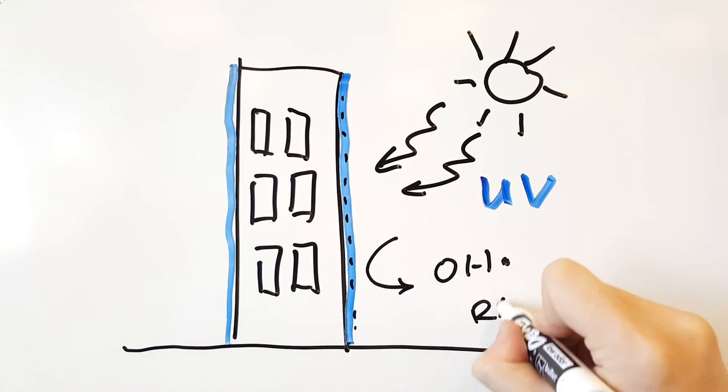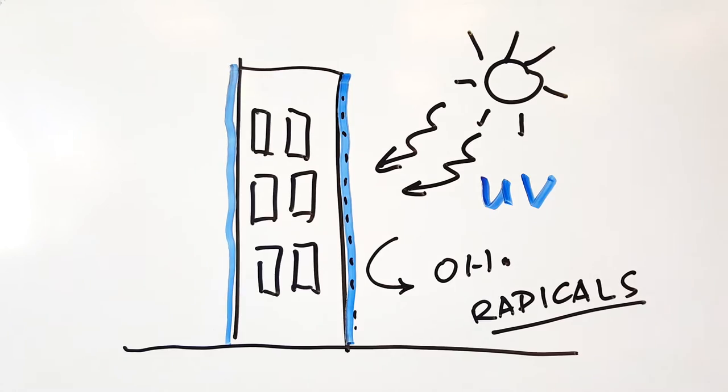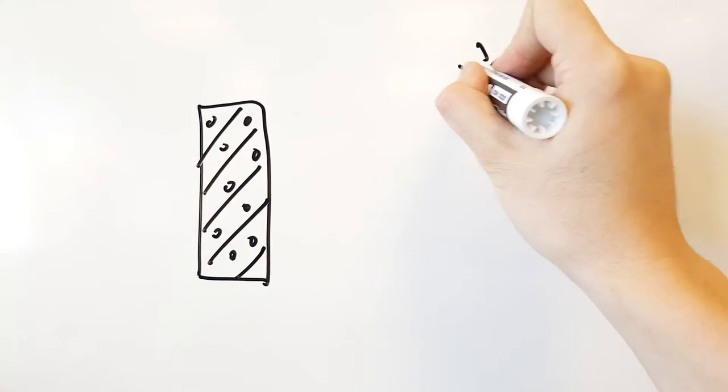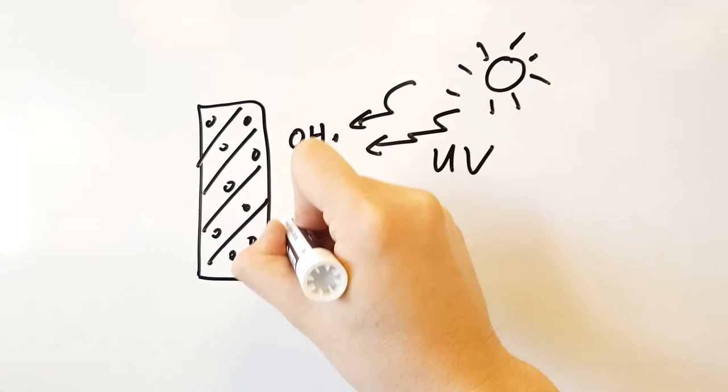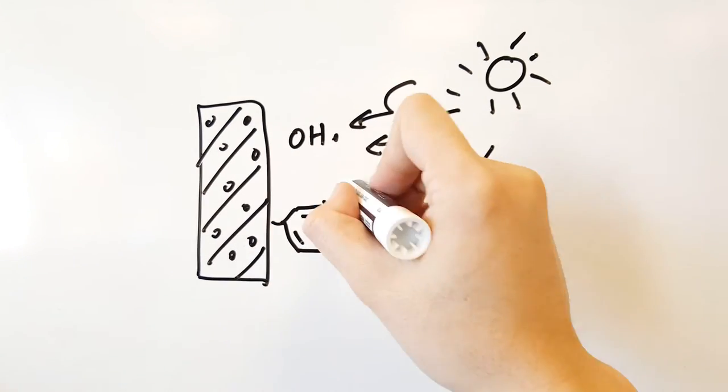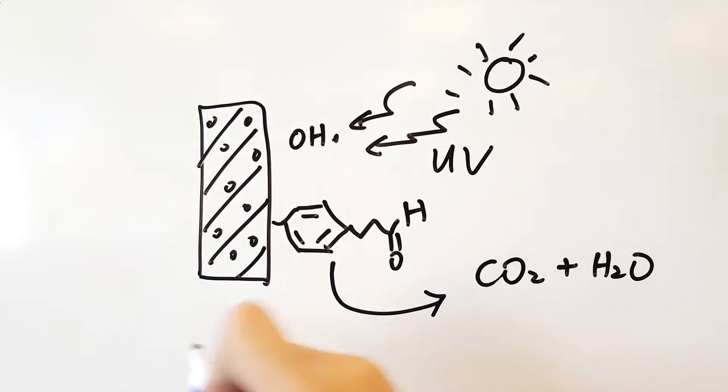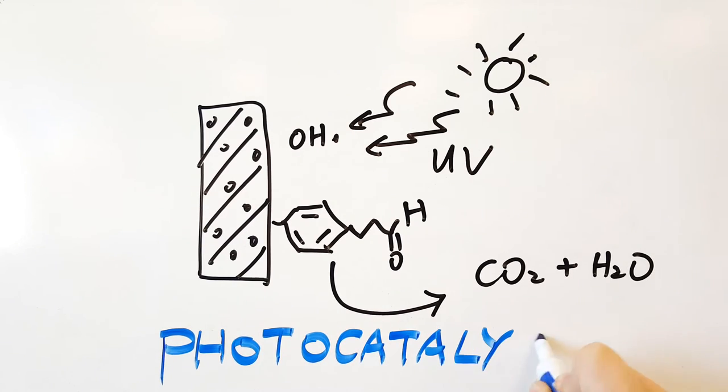These radicals can rapidly break down organic pollutants on the building's exterior into carbon dioxide and water, which are then released into the environment. This process is known as photocatalysis and works without any energy source other than sunlight.